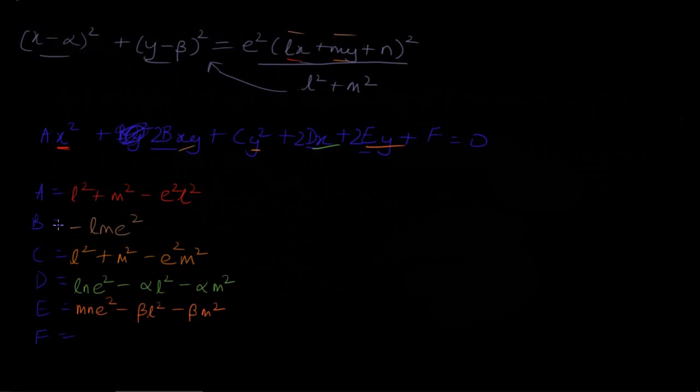As for F the constant, if I just factorize a bit and I write it a little bit better, it's (L square plus M square) into (alpha square plus beta square) minus E square N square.